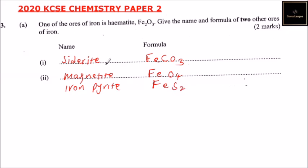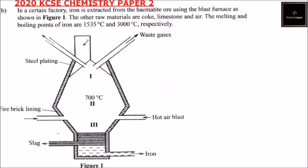So you get a half mark for the name and a half mark for the formula. If you name any two of these, you should be able to get two marks. And that's how you answer that question. Part B.